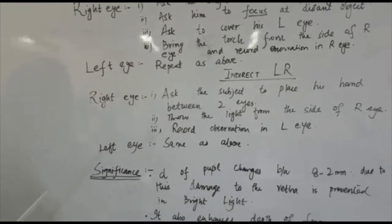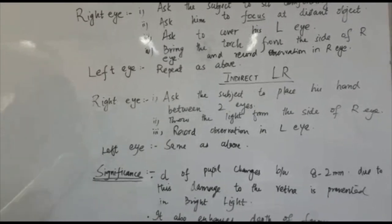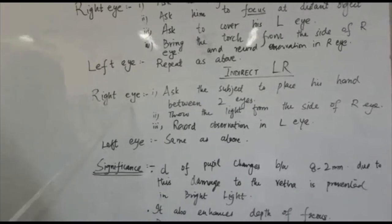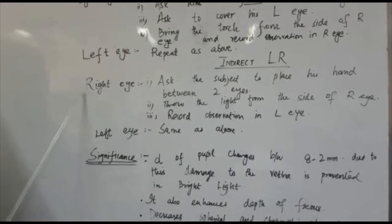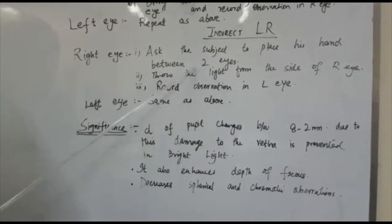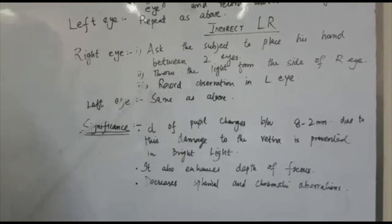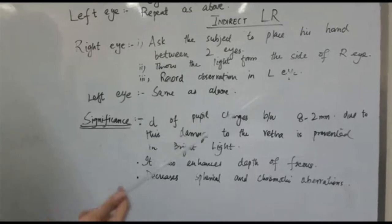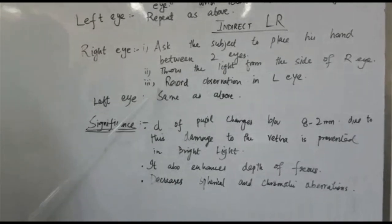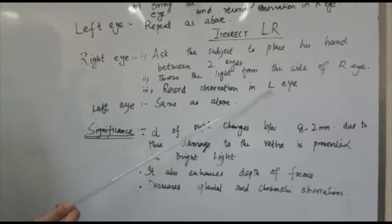Now, what is the procedure for indirect light reflex? To look for the light reflex in the right eye, you will ask the subject to place his hand between the two eyes so that light should not cross over. Then throw the light from the side of the right eye and record your observation in the opposite eye, that is the left eye in this case.